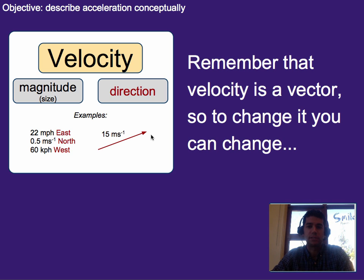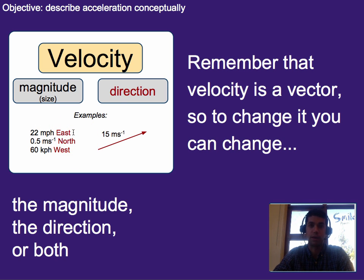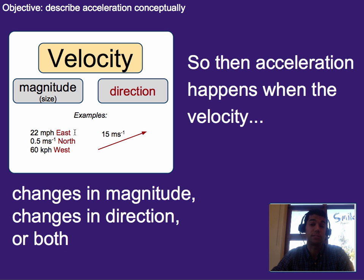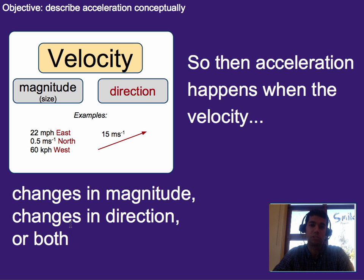I also want you to remember that velocity is a vector, which means you can change it by changing either its magnitude, its direction, or both. So we can change either the speed, or we can actually just change the direction — north, south, east, west, or like one degree off of north. And since acceleration is based on changes in velocity, that means acceleration happens when velocity changes either in magnitude, in direction, or in both. So you can accelerate something by speeding it up, by slowing it down, or by changing its direction even if the speed is staying the same.